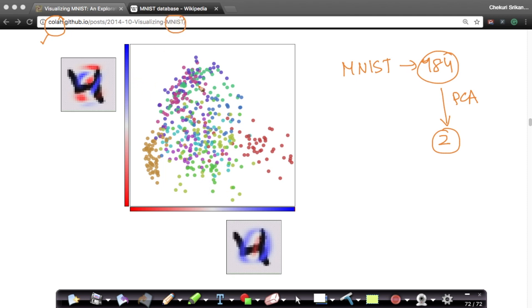What they have done is, they have taken the 784 dimensional dataset, computed PCA, and projected it to the top two eigenvectors, V1 and V2. This direction is V1, this direction is V2.